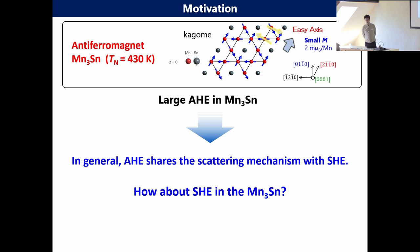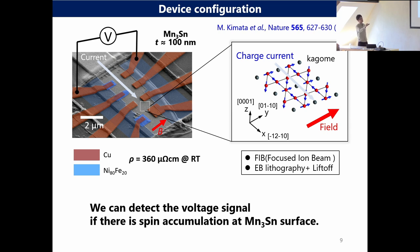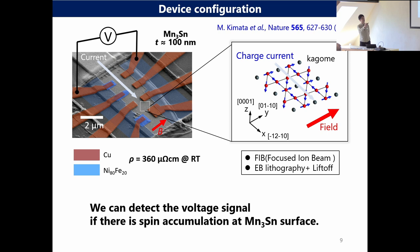This is a sample configuration for spin accumulation detection in the experiment. We use a bulk single crystal of Mn3Sn. The central portion is the Mn3Sn, fabricated by using focused ion beam (FIB) techniques. The sample structure is several microns by 10 or 20 microns — not a very small sample. This root part is a ferromagnetic electrode. By using these devices, we measure the spin accumulation at the surface of Mn3Sn. In the experiment, we apply the charge current in the Mn3Sn in this direction, then measure the spin accumulation signal.